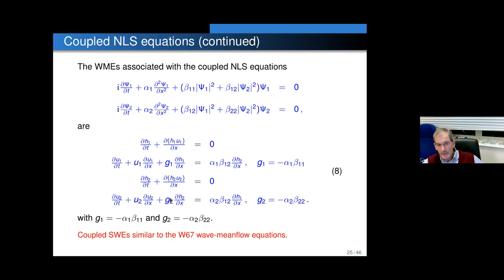The Whitham modulation equations for coupled NLS are the shallow water equations, to some degree known, because Whitham modulation theory is more or less equivalent to doing a Madelung transformation in this case. G₁ and G₂ are consistent with what I showed earlier, because if you set B₁₂ = 0, then the product of alpha₁ and B₁₁ determines stability of the uncoupled single-phase wave trains. Then we have coupling. The coupling is a little bit simpler than the water wave equations, but the principal argument is that the coupled shallow water equations here for modulation of coupled NLS are almost identical to W67 — and here we would never think of one of these as a slave to the other.